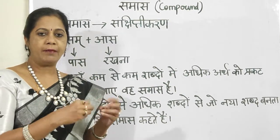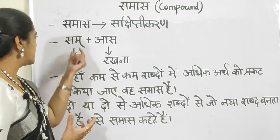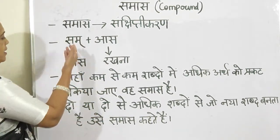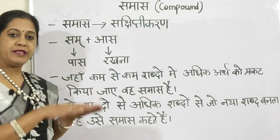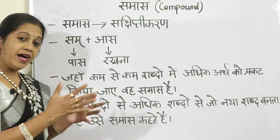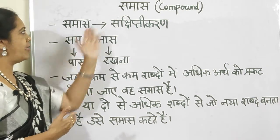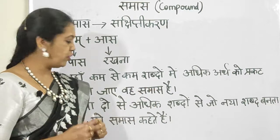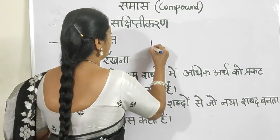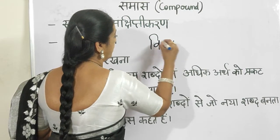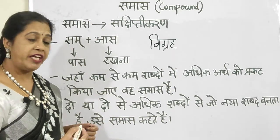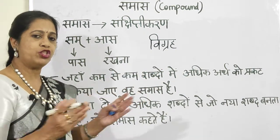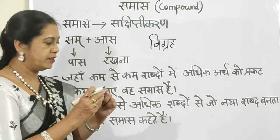Now how is the word Samas formed? Sam plus As. Sam means 'paas' or 'near', and As means Rachna — to create or compose. So Sam plus As equals Samas, meaning 'near creation' or precise composition. Now when you're writing your exams, you get it as Samas Vigraha. Just like in Sandhi you get Sandhi Viched, in Samas you get Samas Vigraha. Vigraha is nothing but splitting or elaborating — extending that word as much as possible.